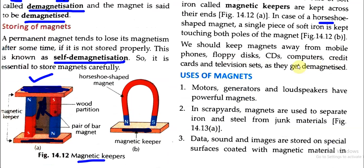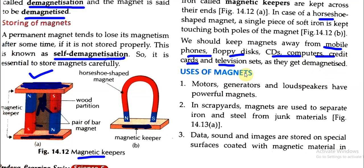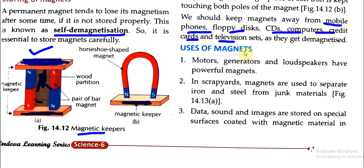We should keep magnets away from mobile phones, floppy disks, CDs, computers, credit cards, and television sets, as they get demagnetized. We should keep magnets away from all these things because they have chips inside which can be affected.